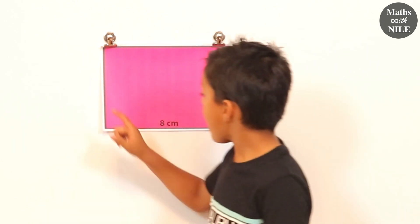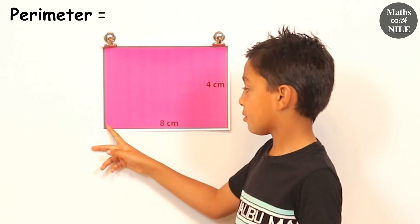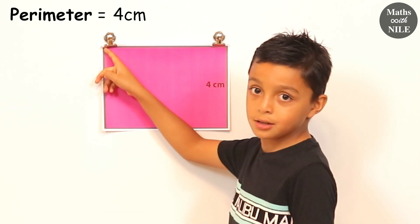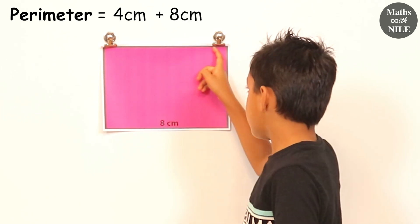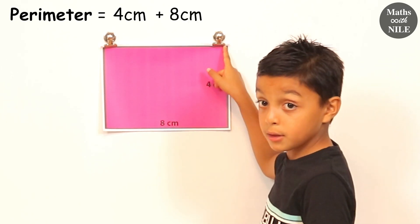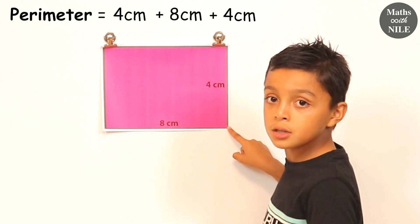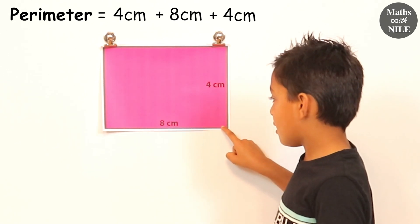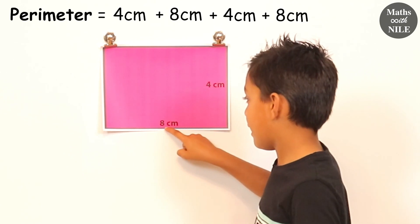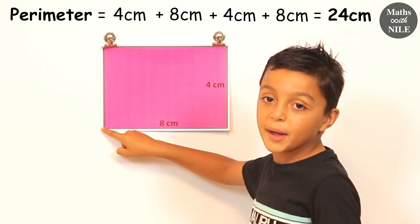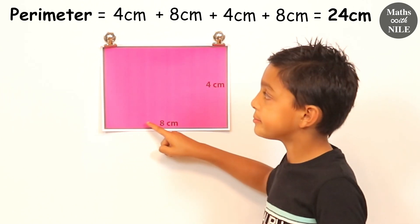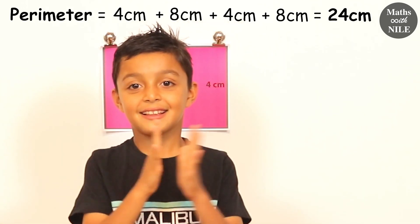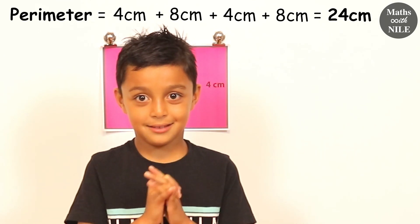So let's find the starting point and we're going to start traveling around the perimeter, counting as we go along. So this is four centimetres, this is eight centimetres, and four plus eight is twelve centimetres. Plus four centimetres is sixteen centimetres, and sixteen centimetres plus eight centimetres is twenty-four centimetres. So the perimeter of that rectangle is twenty-four centimetres.